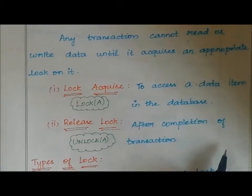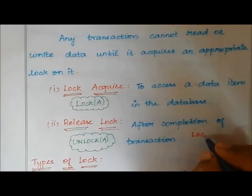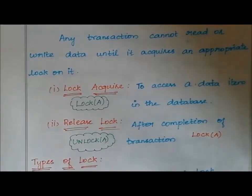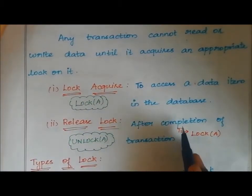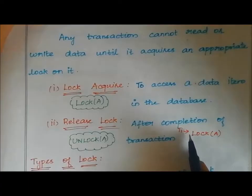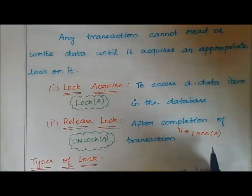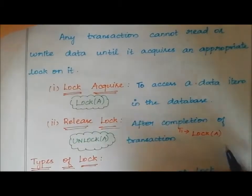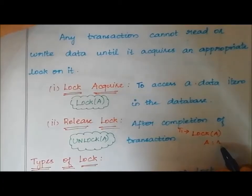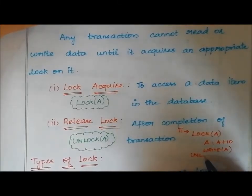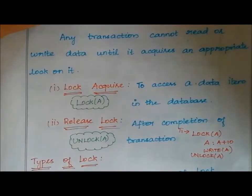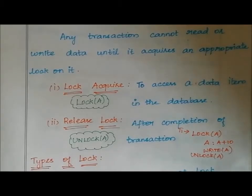After completion of the operation, the lock will be released by the transaction, so that other transactions can use that particular data item. For example, for data item A in the database used by transaction T1: first, lock of A, then write of A, then unlock of A. So in a lock-based protocol, every read or write operation requires a lock.